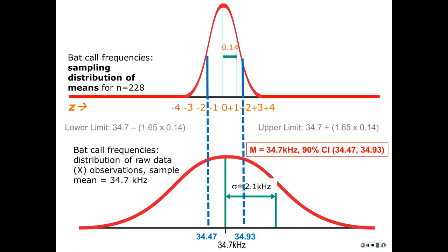Now we need to answer the comparison question. The Arizona bats had a mean of 39.1 kilohertz. Is it plausible that the Arizona and New Mexico bats are the same? Dr. J has evidence they are not, because 39.1 is way outside the 90% confidence interval of 34.47 to 34.93. The 90% confidence interval tells us where we are 90% confident the true mean might be. The Arizona mean is way out there, so our best guess is that the New Mexico bats are somehow different from the Arizona bats.